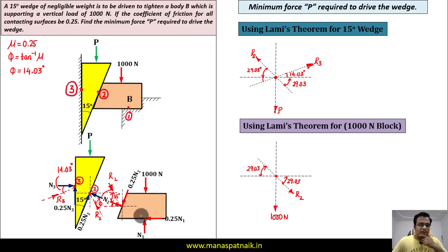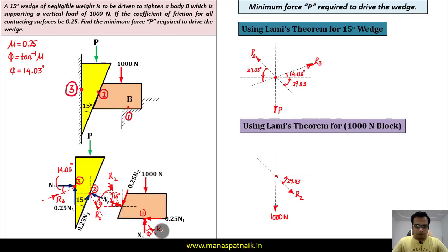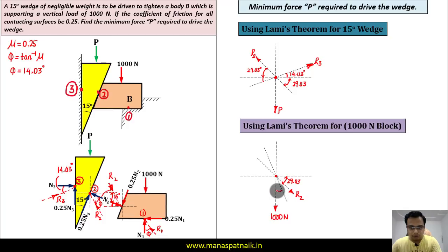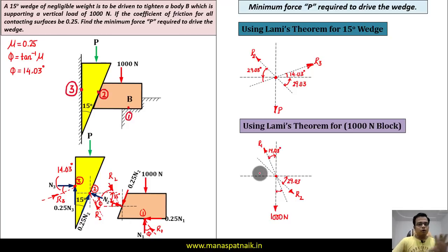Finally, at point of contact one we are going to have a resultant R1. R1 makes an angle phi — which is 14.03 degrees — with the vertical. So R1 makes an angle of 14.03 degrees with the vertical, as shown in the diagram.